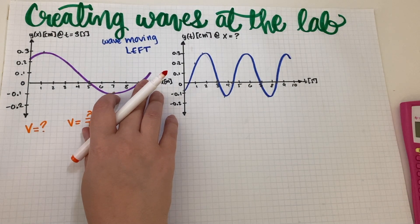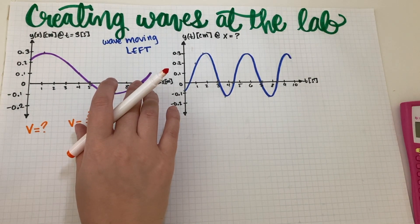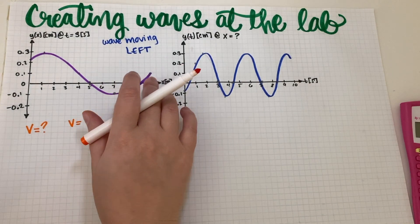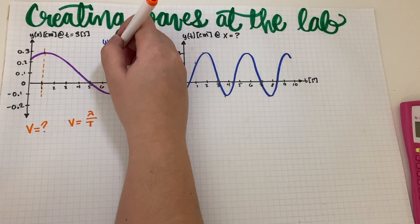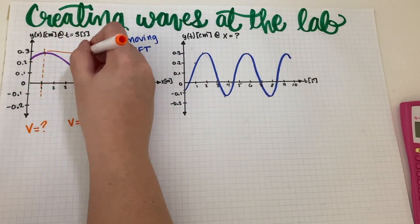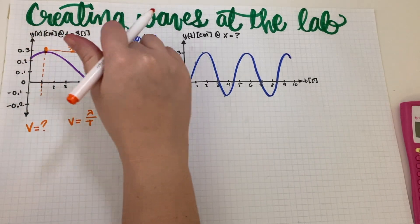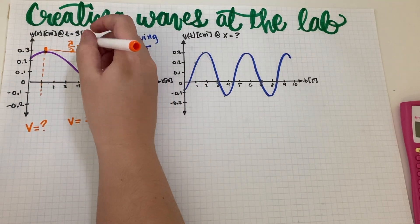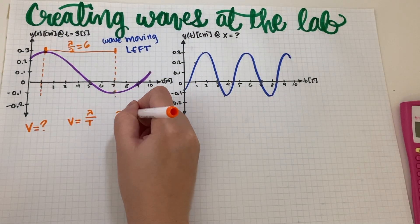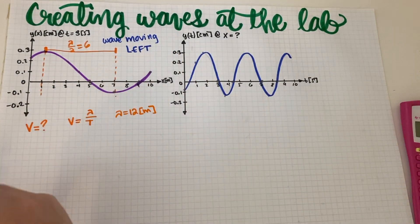This is a y versus x graph, so from a y versus x graph we can get our lambda. Usually I find two maximums and measure the distance between them, but this graph doesn't clearly have two maximums, so we're going to take the distance from max to min and multiply by two. This distance — from max to min — is lambda divided by two, and that distance is 1, 2, 3, 4, 5, 6 meters, which means lambda equals 12 meters.